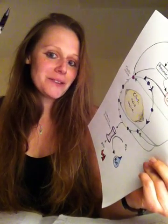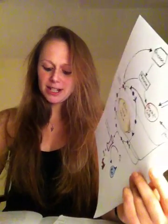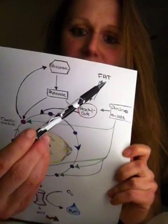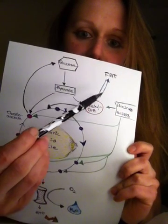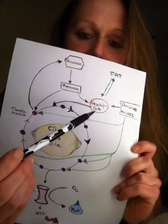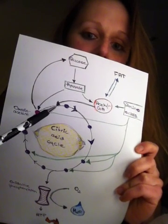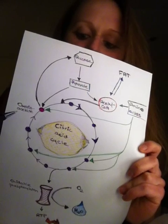Okay, now I would like to address also another sentence which is fats burn in flame of carbohydrates. As you can see here, fats are broken down into acetyl-CoA. And in order to enter the citric acid cycle, they have to combine with this oxaloacetate,